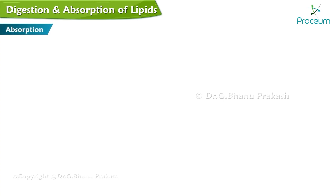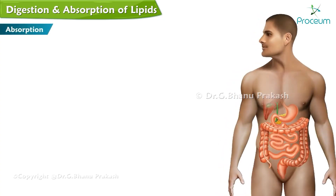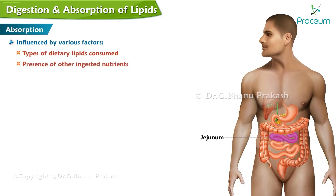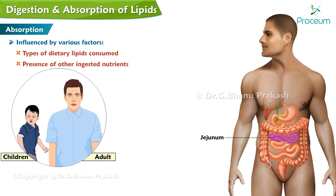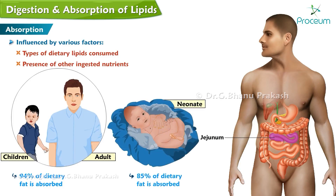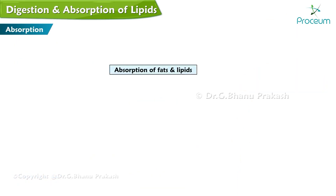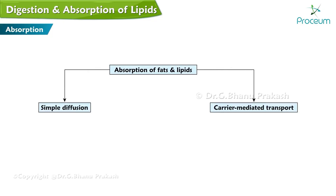Most of the dietary lipids are absorbed in the proximal two-thirds of the jejunum. Absorption is influenced by various factors, such as types of dietary lipids consumed and the presence of other ingested nutrients. In normal children and adults, more than 94% of dietary fat is absorbed, although healthy neonates may absorb as little as 85%. Absorption of fats and lipids can occur in two modes: simple diffusion or carrier-mediated transport.